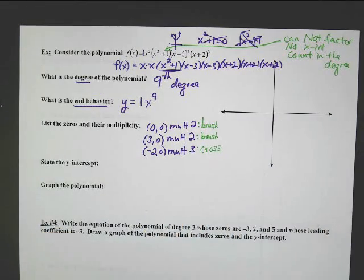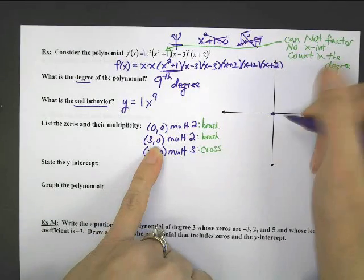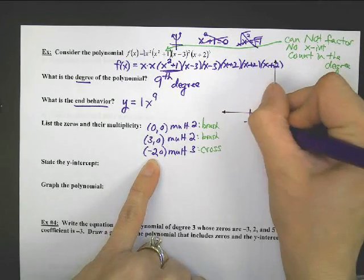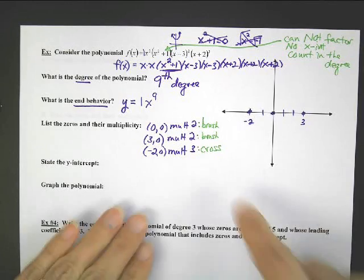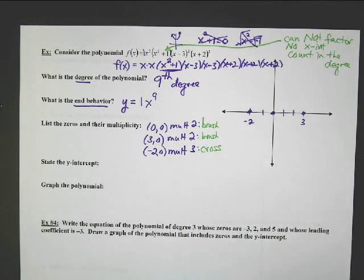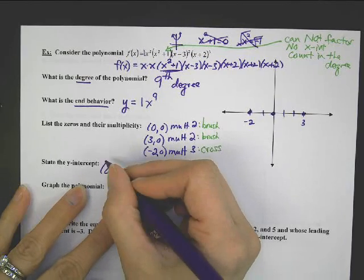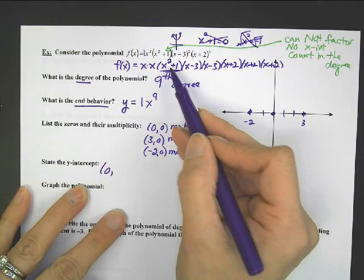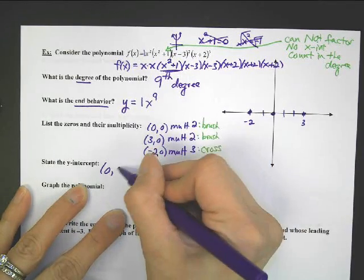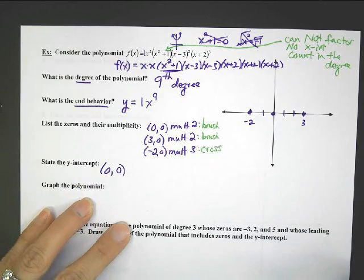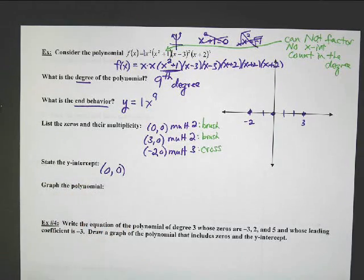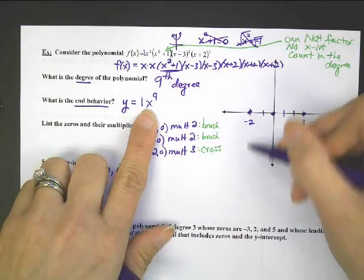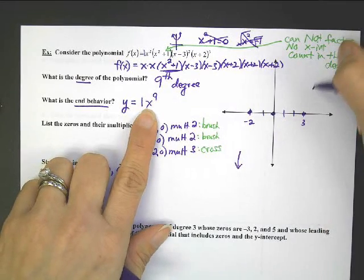So I'm going to get my x-axis set up — 0, 0; 3, 0; and negative 2, 0 — and I know when I get there if I'm going to brush or cross. State the y-intercept: put 0 in for x — this is going to be 0 because x times x times 0 times anything is going to be 0. And graph the polynomial. The end behavior for an odd 9th degree is going to be going down and then up.